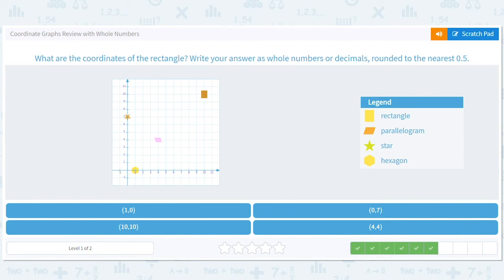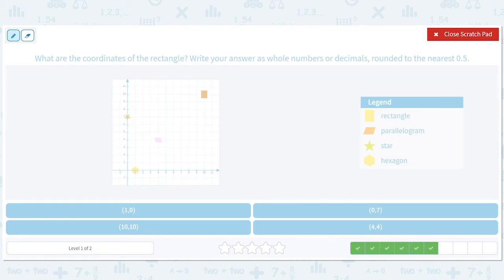What are the coordinates of the rectangle? Write your answer as whole numbers or decimals. This rectangle is at one, two, three, four, five, six, eight, nine, ten to the right. And I can see it's ten up. So the coordinates of the rectangle are (10,10).